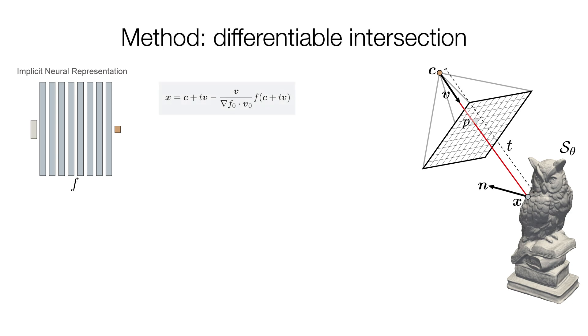The first step is to represent the intersection point and its normal as differential functions of the implicit geometry and the camera parameters. We implement it by simply composing the neural network with a fixed linear computation at its entrance, and another at its output.